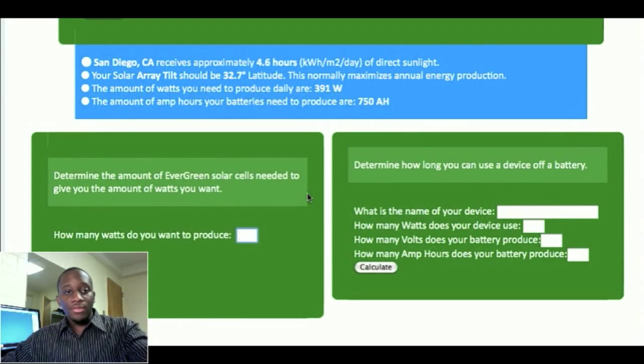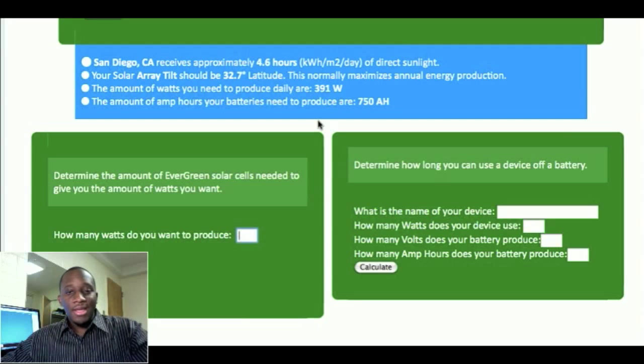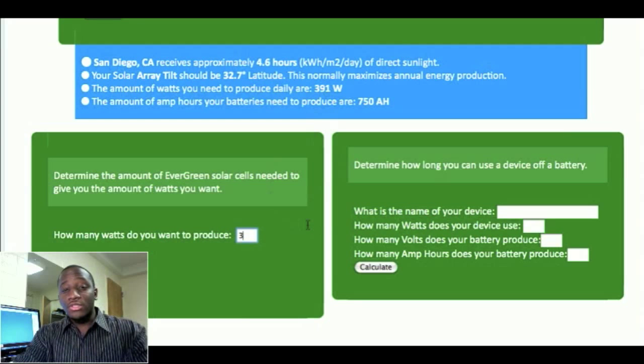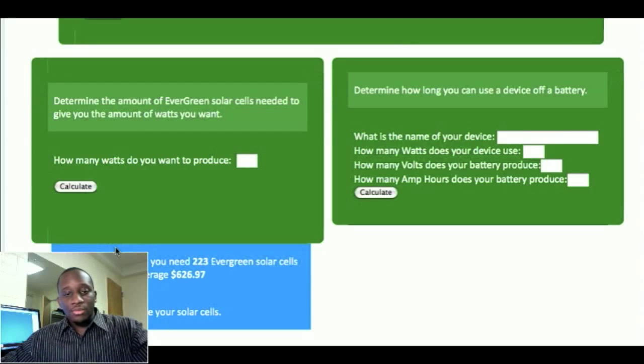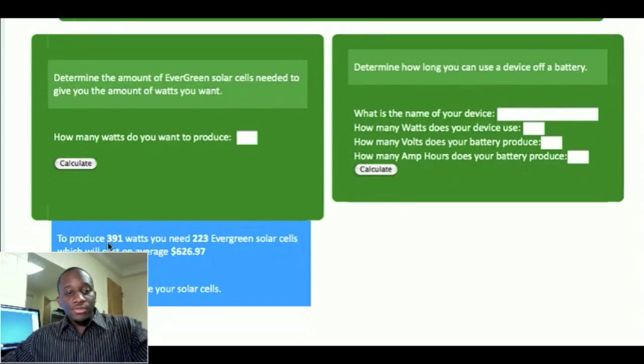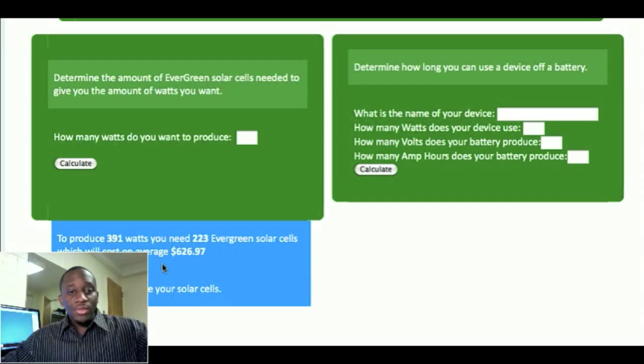Let's say, okay, we're going to go with this San Diego number here. And we see that we need 391 watts. So let's say we're going to build our own solar array. And I really probably wouldn't do this. I would probably just go out and buy a professional one if I'm going to spend that amount of money for a solar array. But let's just say we're just going to build our own. Click on this Calculate button here and let the page reload. And to produce 391 watts, you're going to need 223 evergreen solar cells, which on average is going to cost $626. So as you can see, it's going to be a pretty penny to pay for that.